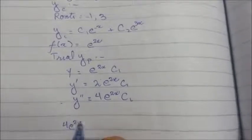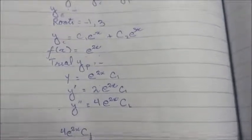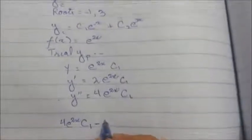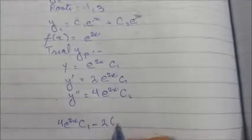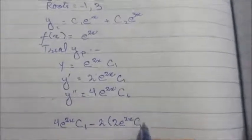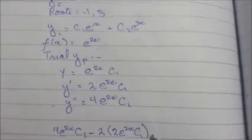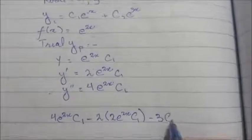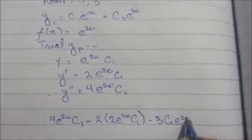So, 4e^(2x)c1, as according to the equation, minus 2, first derivative, 2e^(2x)c1. And minus 3y, which is c1e^(2x), which is equal to e^x.